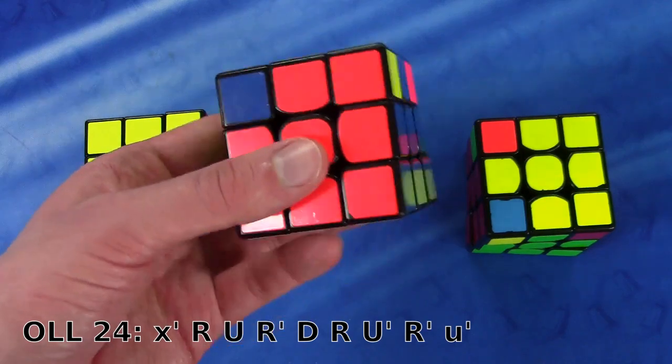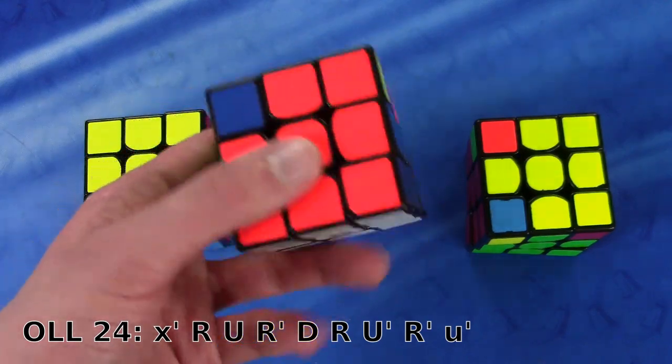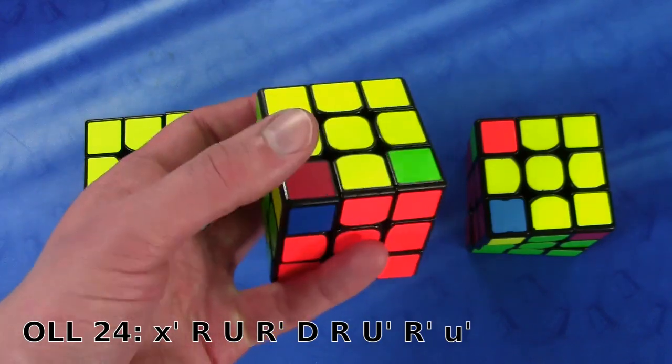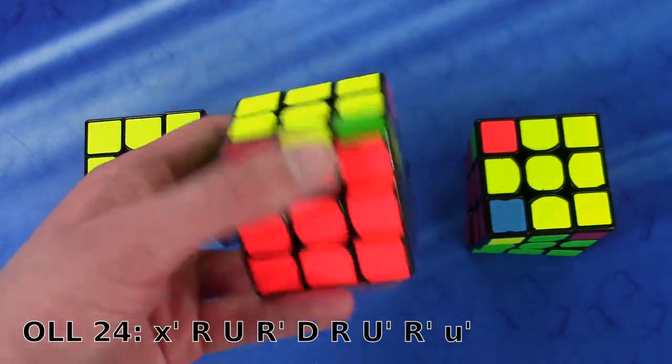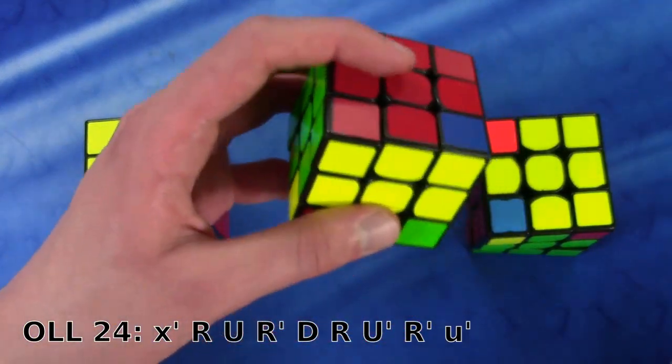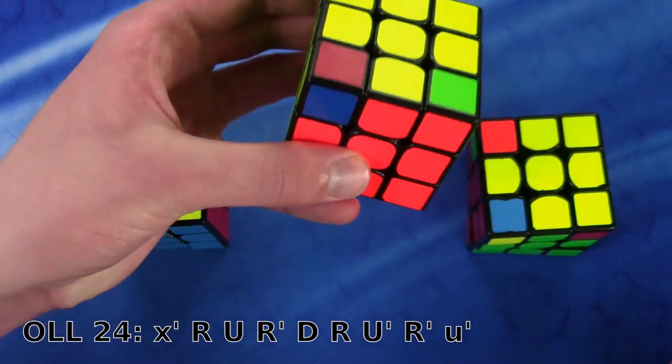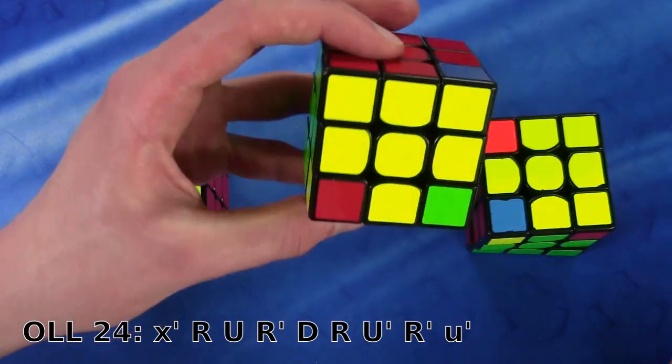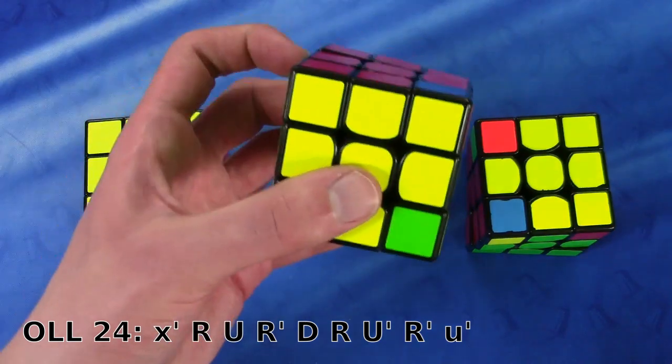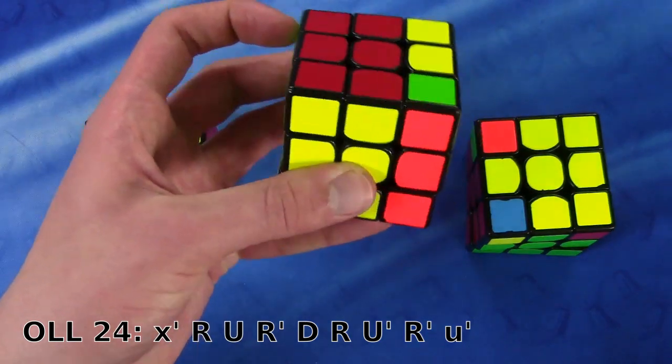So first you're going to go up like this. And the way that I finger trick that is I kind of bring my pinky here and then just transfer my fingers all around. So basically I'm like this, I'm like this. And then I just pinky in the front to help the movement and then just move it like that.